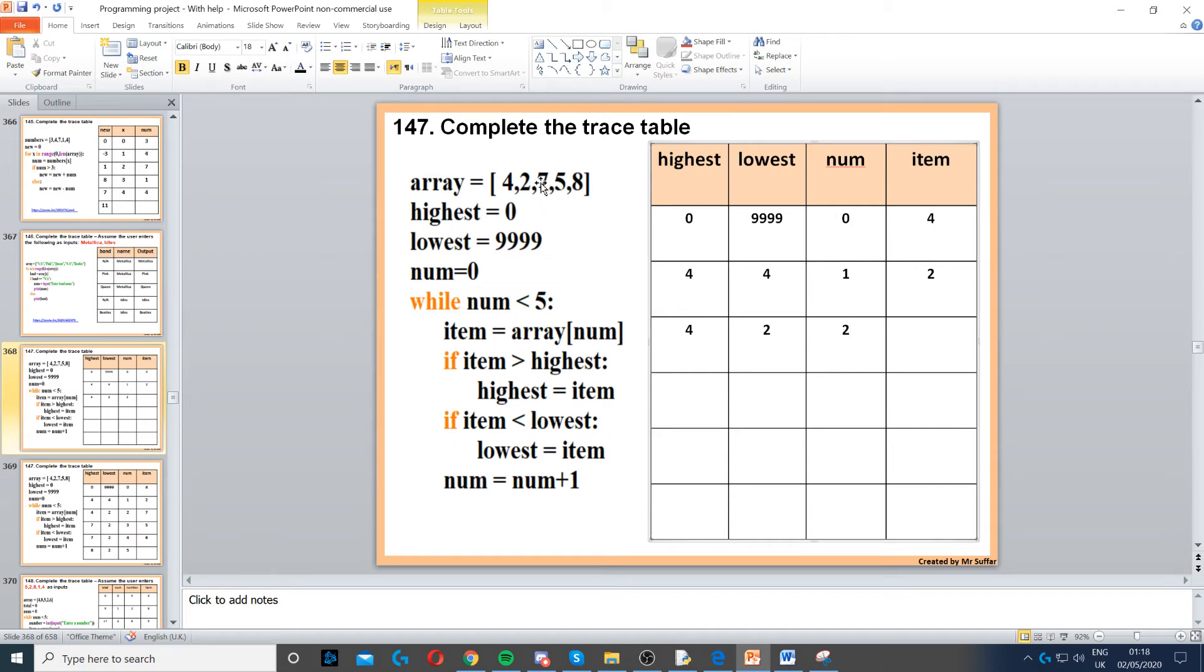Num will increment by 1. Next index is 7. Then we have item, so if item is greater than highest, 7 is greater than 4, so we set that to 7. 7 is not less than 2, so we keep it as 2.